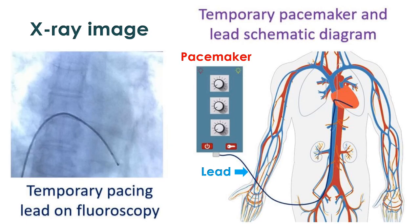Temporary pacing is done using an external device known as a temporary pacemaker. It is an electronic device which can give regular electrical pulses to the heart. It is placed outside the body and connected to the heart with electrical leads introduced through the veins of the neck or groin through a small hole in the skin.